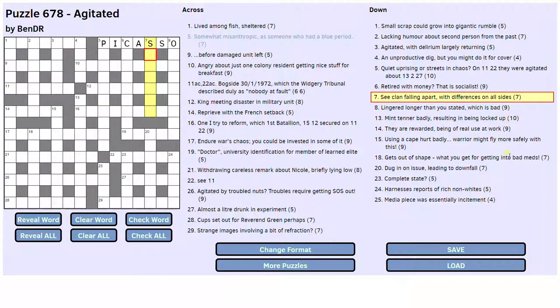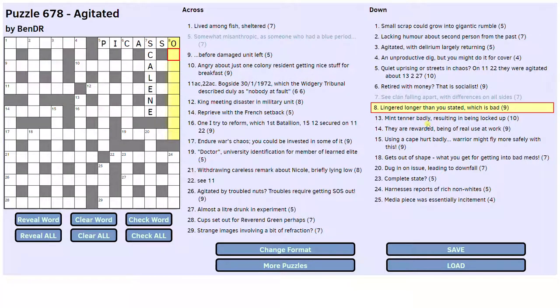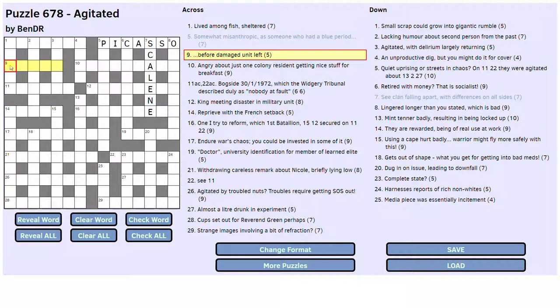Sea clan falling apart. Looks like an anagram. With differences on all sides. Scalene. That's a nice clue. A scalene triangle is one that has a different length side on each of the three sides. It's an anagram of sea clan. Lingered longer than you started, which is bad. Lingered longer than you stated, I mean. Which is bad. Over something. Lingered. Over. Slept. I don't know. Before. Damaged. Unit. Left. Until. Yeah. That's an anagram. Unit and L for left. Damaged is the anagram indicator. And before is until. In some context, I suppose.